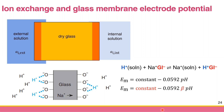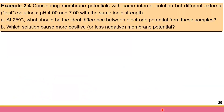Let's do a calculation problem — Example 2.4. Consider the membrane potential with the same internal solution but two different external solutions: pH 4 and pH 7, with the same ionic strength. At 25°C, the questions are: (a) What is the ideal difference between the electrode potentials from these two samples? And (b) which solution causes a more positive (or less negative) membrane potential?